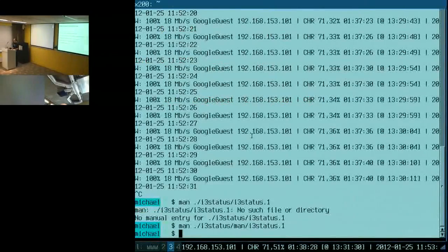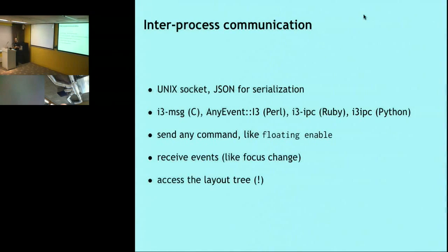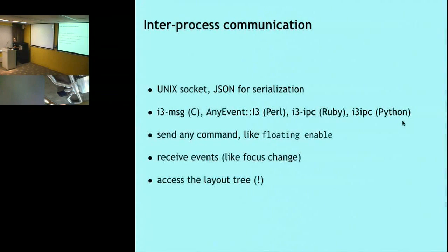Inter-process communication: we have a Unix socket for IPC instead of a pseudo file system like WMII, and we use JSON for serialization because it's available in virtually every language. Several implementations make use of the IPC socket: i3-message in C, a Perl module, Ruby and Python modules, and even a Node.js module. With the IPC interface you can send any command — like 'focus left' or 'floating enable' — receive events like focus changes, and most importantly access the layout tree.